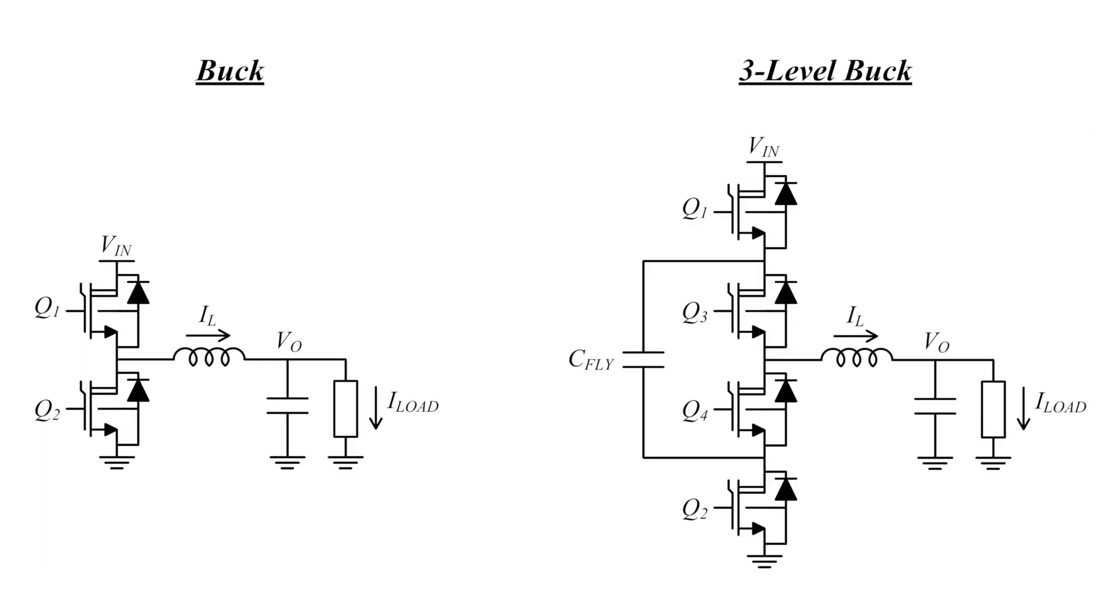The BQ25910 is based on a three level buck converter, which adds a flying capacitor, CFLY, and a couple of switches to the traditional topology. By maintaining the flying capacitor balance at half the input voltage, the switch node can be presented with VIN, VIN over two, or ground, hence the name three level converter.